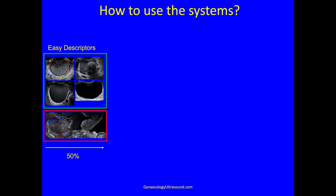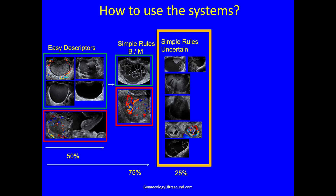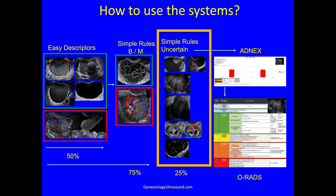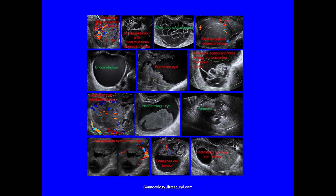So how do we use the systems? When we scan a lesion, we first look to see if it's categorisable using easy descriptors as benign or malignant — this accurately categorises about half of all adnexal lesions. For those that don't fit an easy descriptor, we use simple rules, which brings us to 75% of all adnexal lesions categorised. When simple rules are uncertain, we apply ADNEX to get a risk of malignancy, and can then put that score into the ORADS chart for a management suggestion. The era of calling lesions 'complex' is gone.